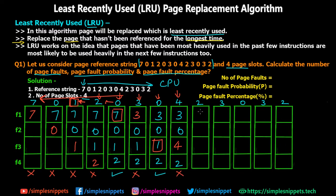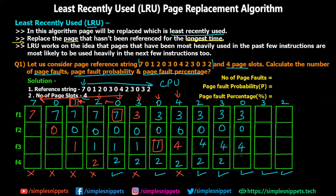Moving ahead: page 2 is requested and is already in memory — no page fault. For the last four steps, pages 3, 0, and 2 are already in main memory so no page faults occur. The values remain: 3, 0, 4, 2 throughout these final steps. That completes the full timeline chart for this numerical.